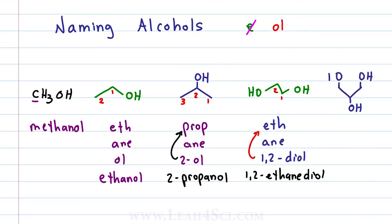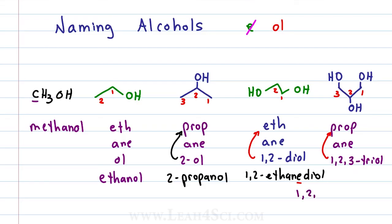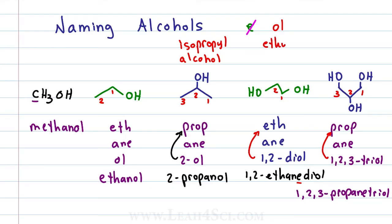For a three-carbon molecule with alcohols on carbons 1, 2, and 3, we have 'prop,' only single bonds in the chain for 'ane,' and a triol on carbons 1, 2, 3 — giving us 1,2,3-propanetriol. You should recognize these molecules beyond their IUPAC names: methanol is wood alcohol; ethanol is grain or drinking alcohol and a common solvent in reactions; 2-propanol is isopropyl alcohol or isopropanol, your standard rubbing alcohol; 1,2-ethanediol is ethylene glycol, a carbonyl protecting group you'll see very soon; and 1,2,3-propanetriol is glycerol, the backbone used for fatty acid formation.